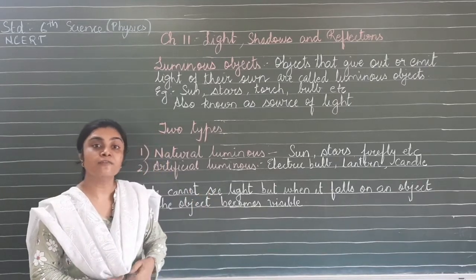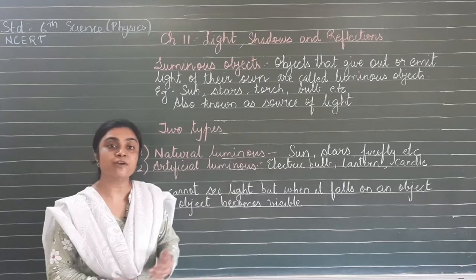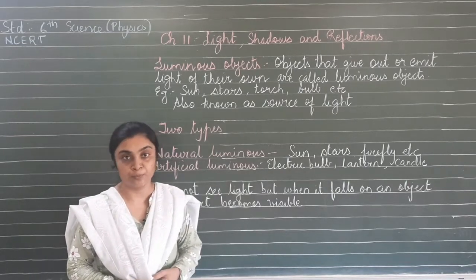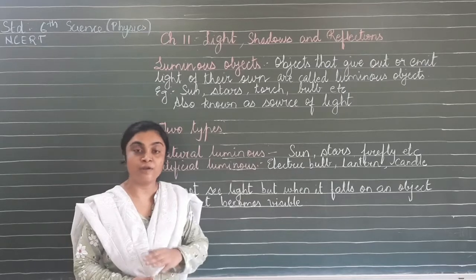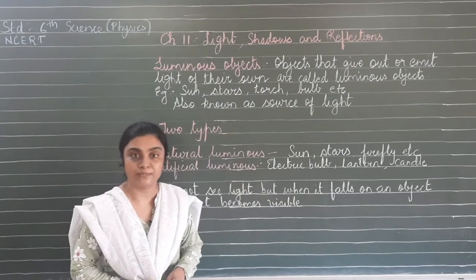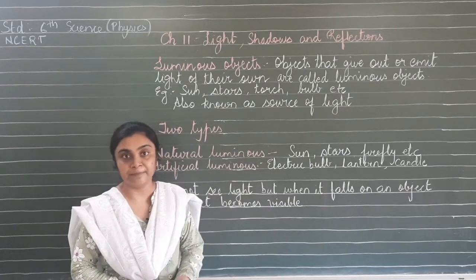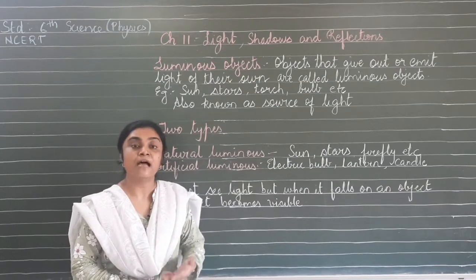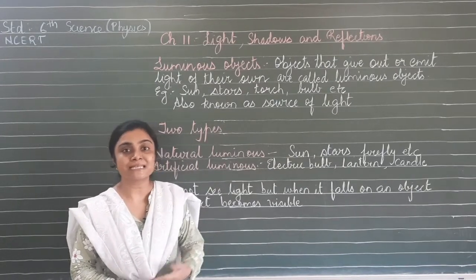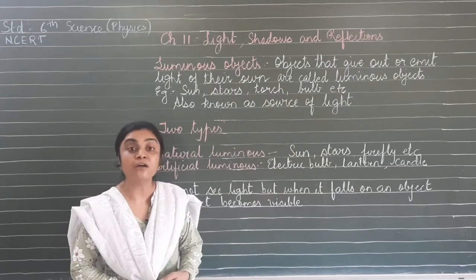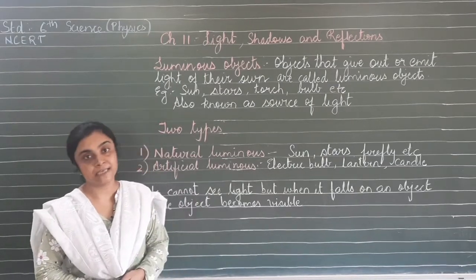We can see different objects with the help of light. Suppose you are kept in a completely dark room - you will not be able to see any objects. But if that room is lit up, either by a light, a candle, or a torch, then you can start observing all the objects - because light is present there.